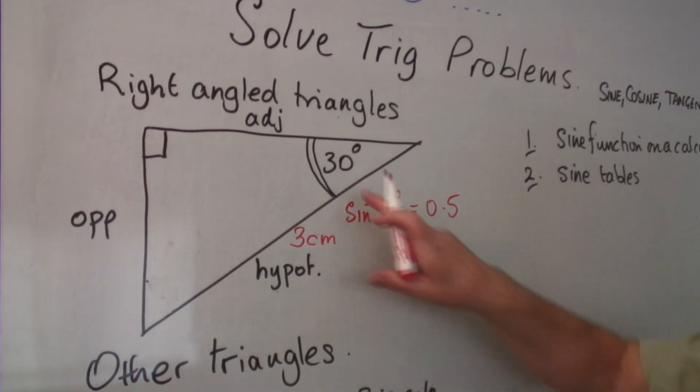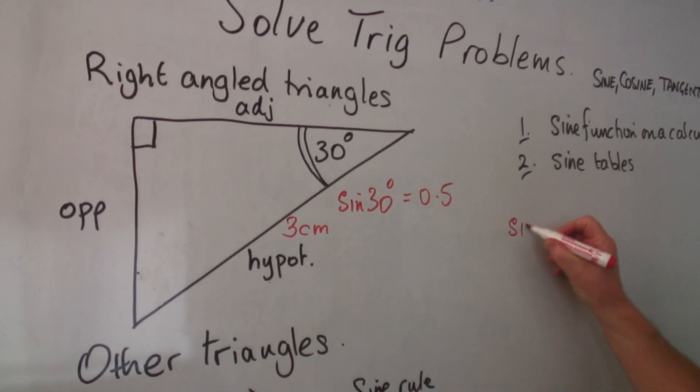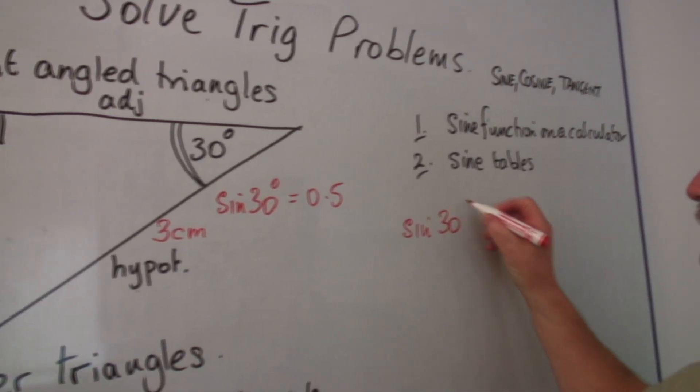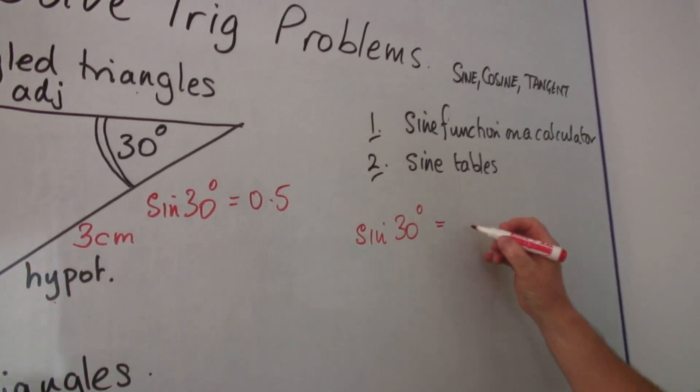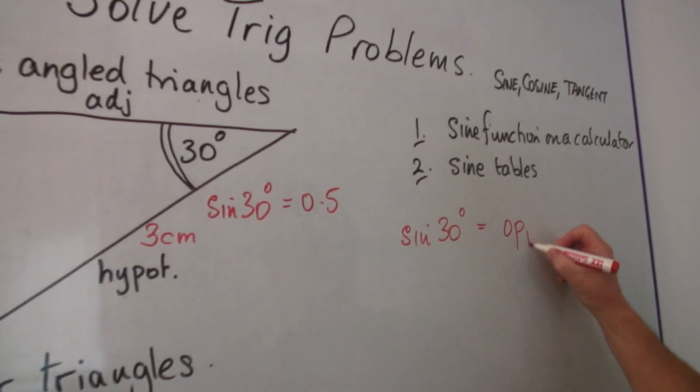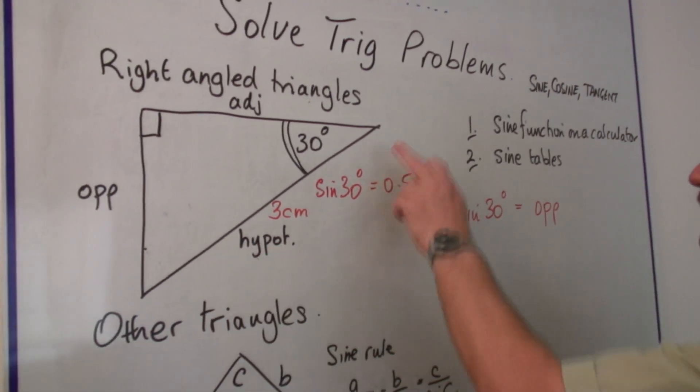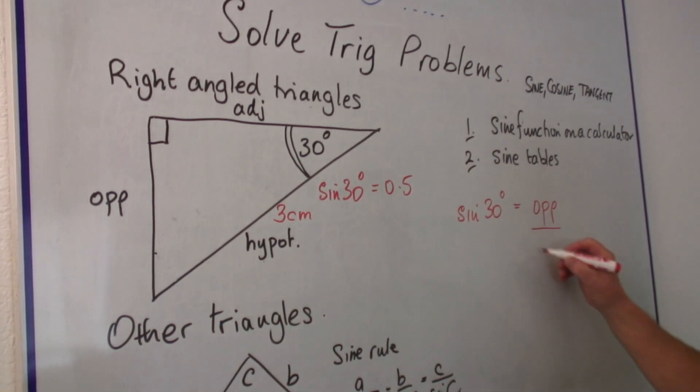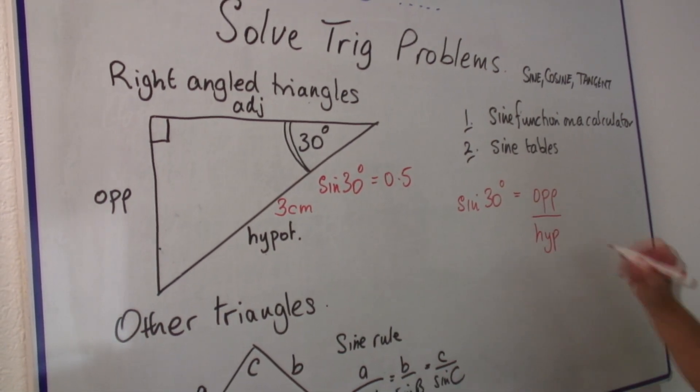We would therefore say that sine of 30 degrees is equal to the length of the side opposite, just write that as opp, divided by the hypotenuse over hyp.